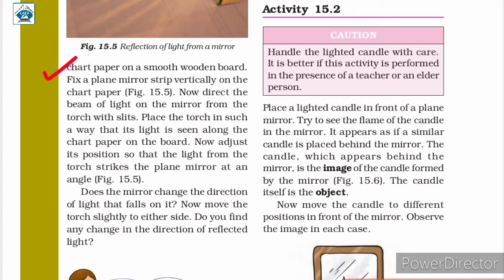Fix a plain mirror strip vertically on the chart paper. Now, direct the beam of light from the torch with slits onto the mirror. Place the torch in such a way that its light is seen along the chart paper on the board.